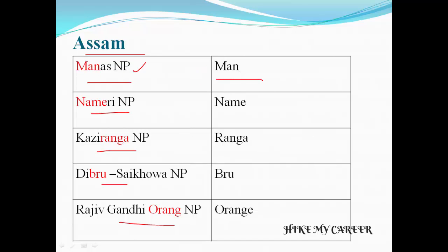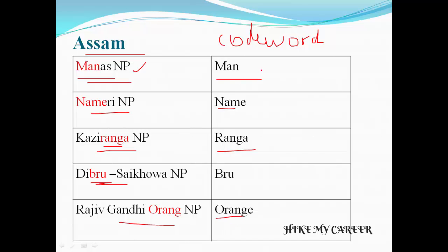Manas National Park code word is MAN. Nameri National Park code word is NAME. Kaziranga National Park code word is RANGA. Dibru-Saikhowa National Park code word is BLUE. And Rajiv Gandhi Orang National Park code word is ORANGE. The combined code word is: Man, Named, Ranga, Blue, Orange.